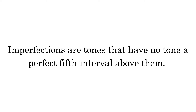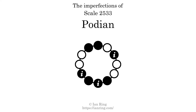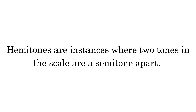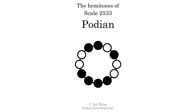Imperfections are tones that have no tone a perfect fifth interval above them. This scale has three imperfections. They are at positions here, here, and here. Hammertones are instances where two tones in the scale are a semitone apart. This scale has four hammertones. They are at positions here, here, here, and here.